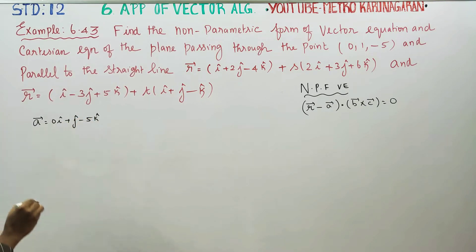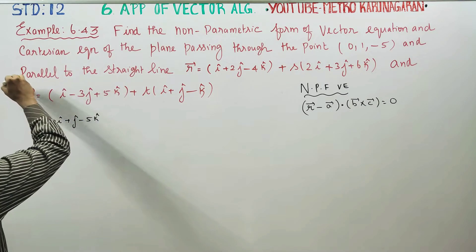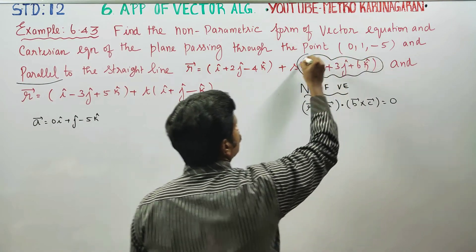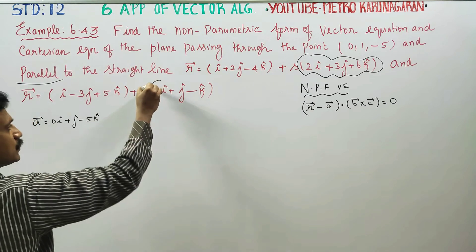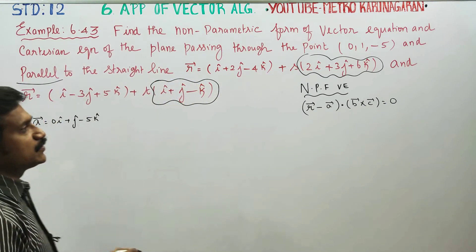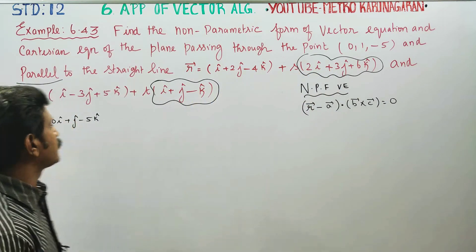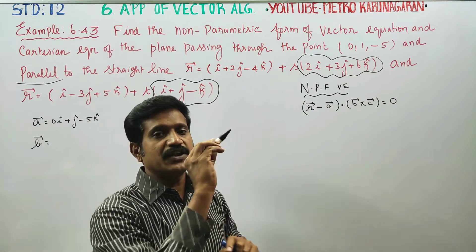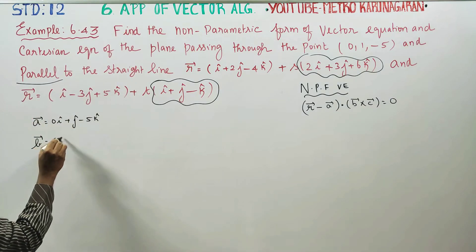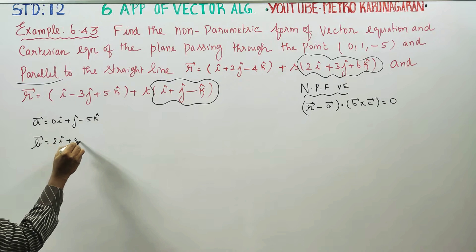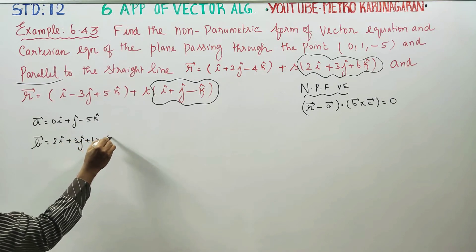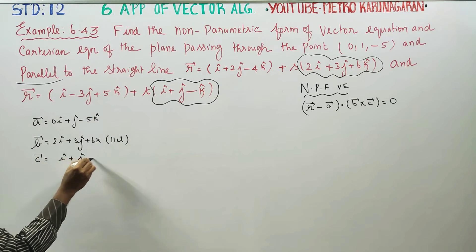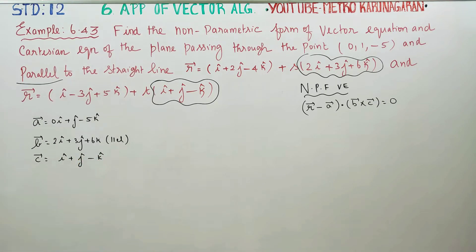We declare a vector is equal to 0i plus j minus 5k. In the two straight lines, we have parallel vectors. The b vector is equal to 2i plus 3j plus 6k, and the c vector is equal to i plus j minus k. These are the parallel vectors.